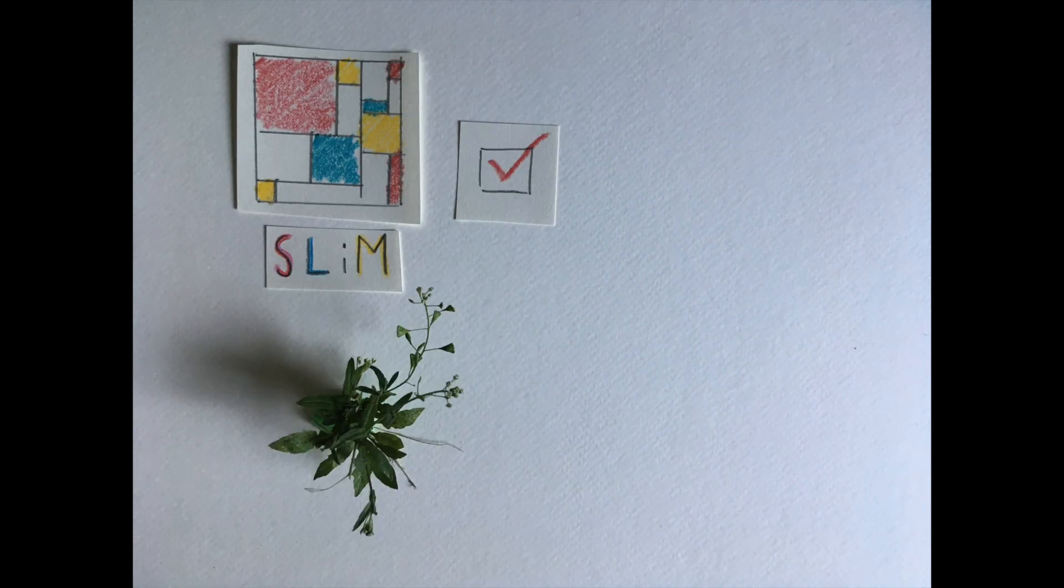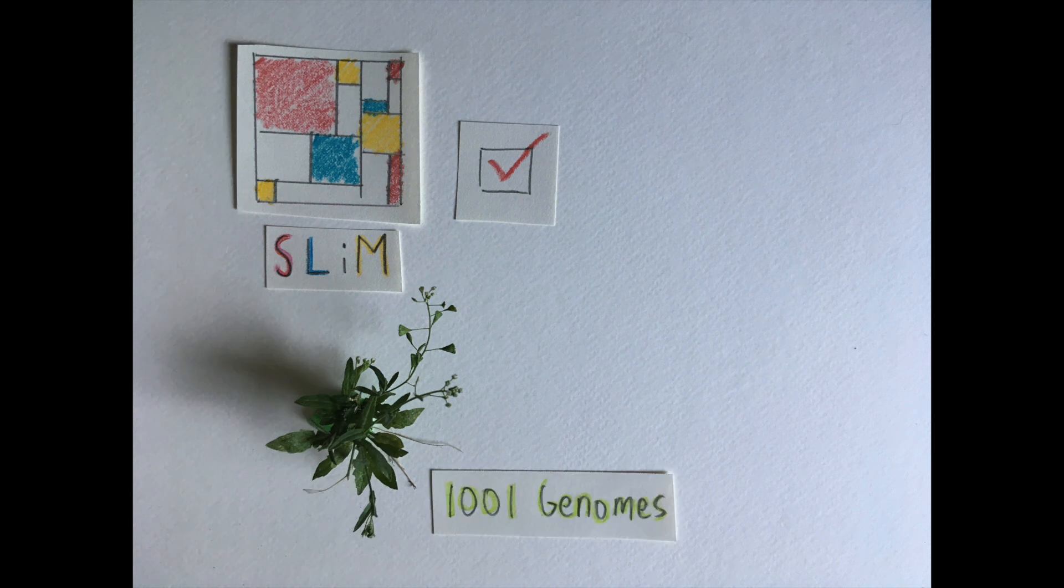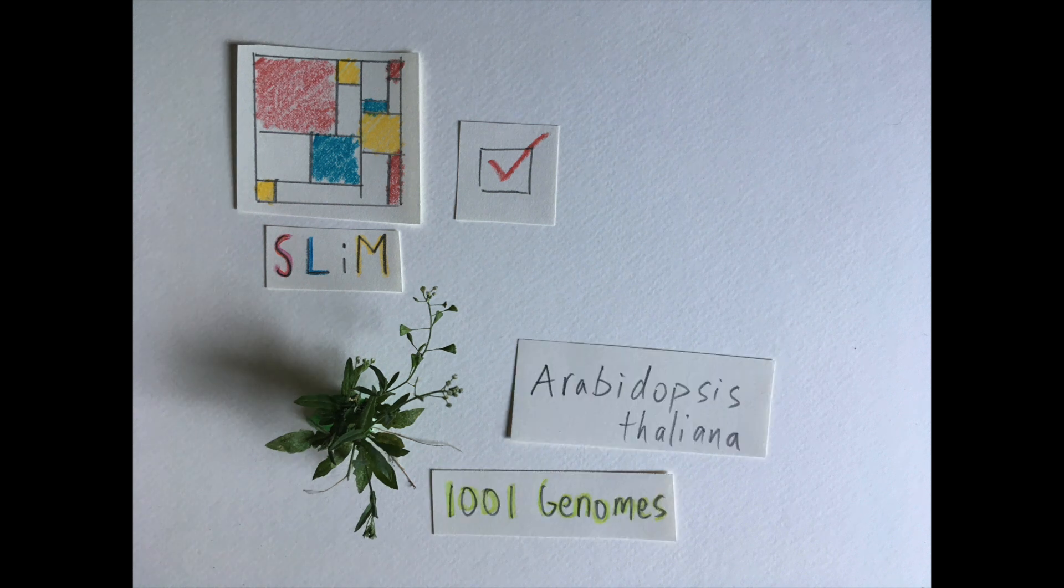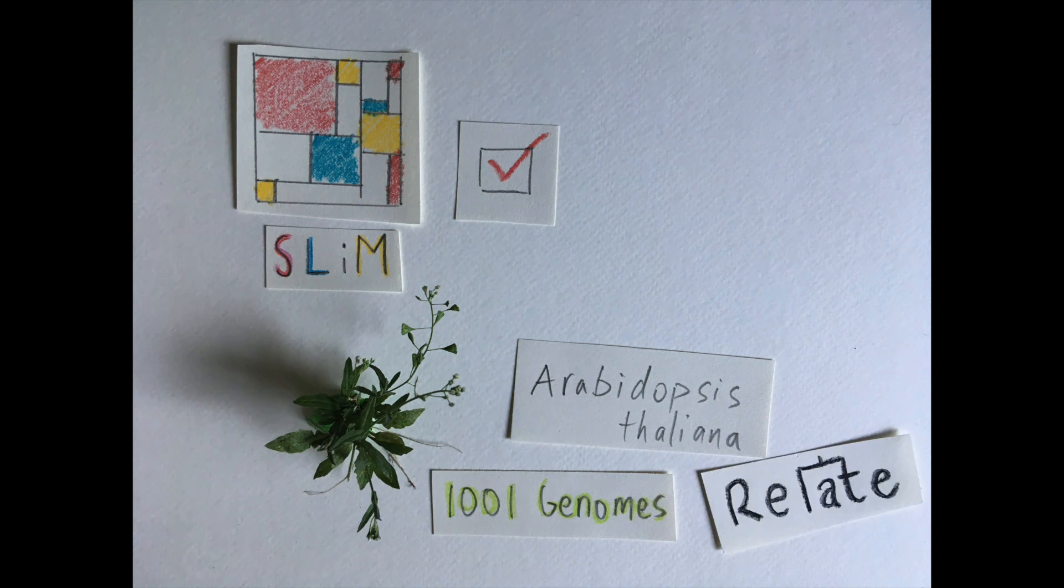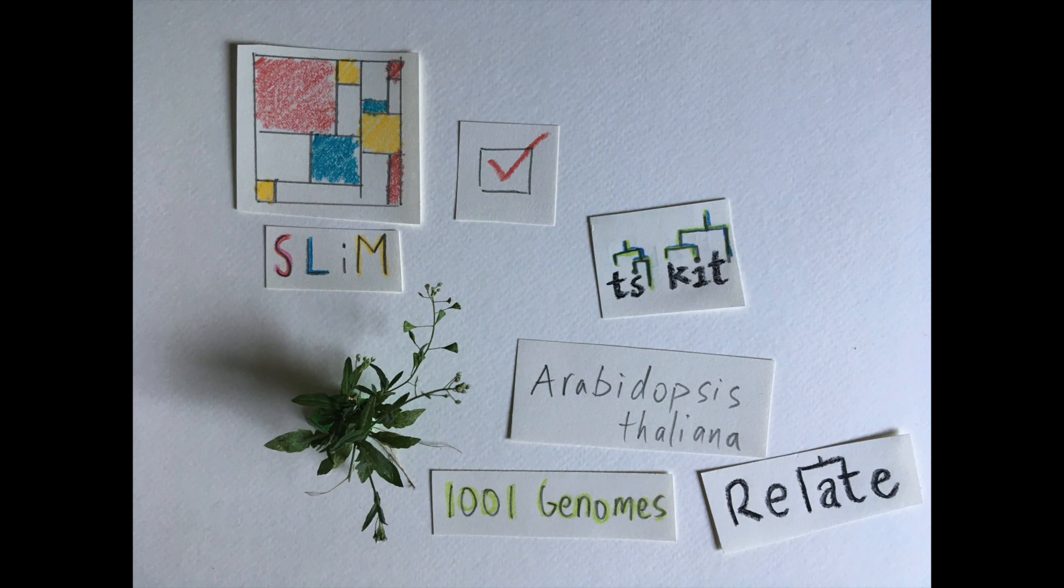We first tested all this using simulations in SLIM and then applied it to the 1001 genome dataset of Arabidopsis thaliana. In both cases, we used Relate to infer the tree sequences and TS-kit to load and manipulate them in Python.